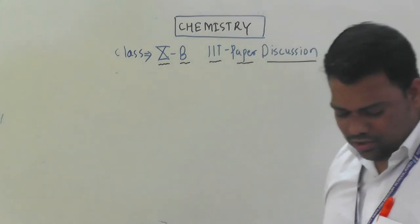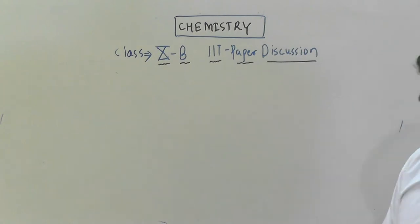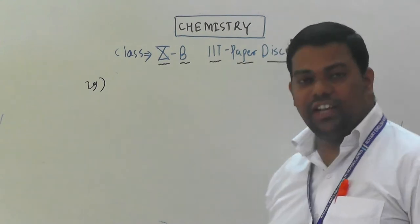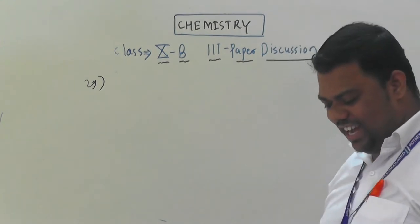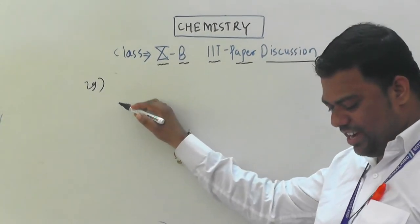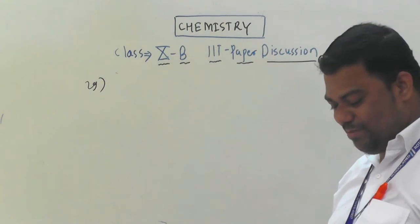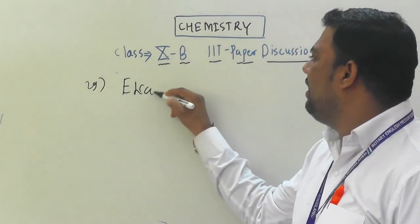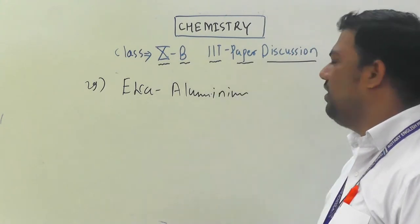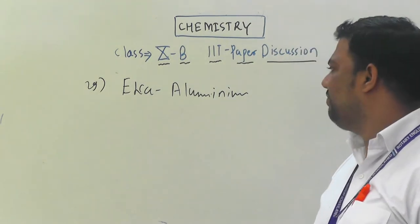Question number 29: Mendeleev named gallium as what? Option A is eka-boron — no. Option B is eka-aluminium — yes. Eka-aluminium is what we now call gallium. So the answer is option B.